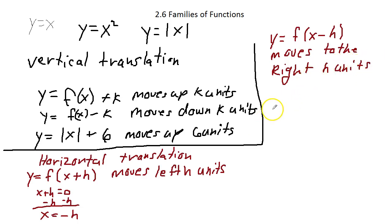So, if I had y equals the absolute value of x minus 3, you notice this is inside of the absolute value, inside. So, this is going to be a horizontal movement. And it moves to the right h units. So, our description would be moves right h, which h was 3, so we'd say 3 units.